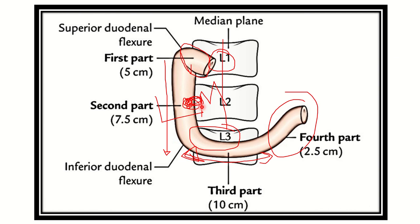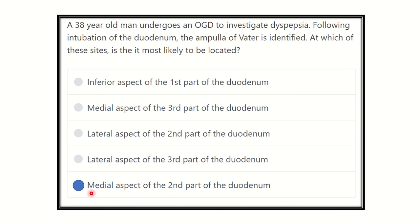So the final answer is: the ampulla of Vater opens into the medial aspect of the second part of the duodenum.